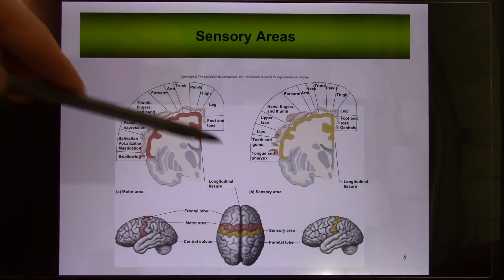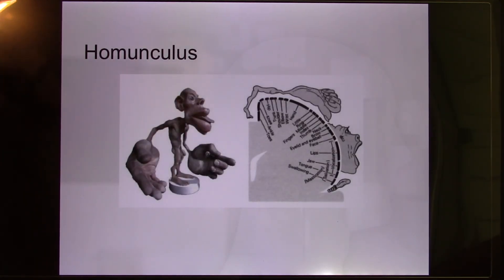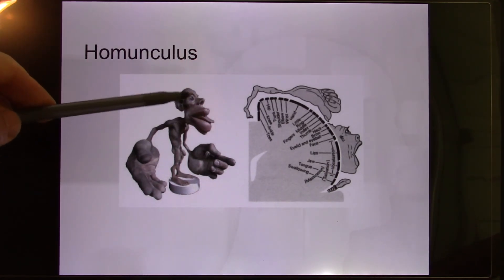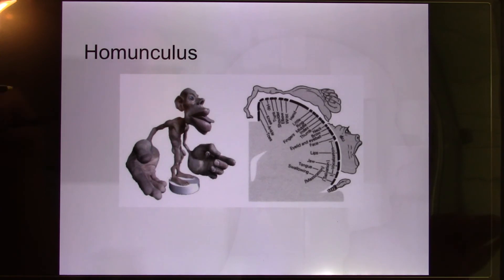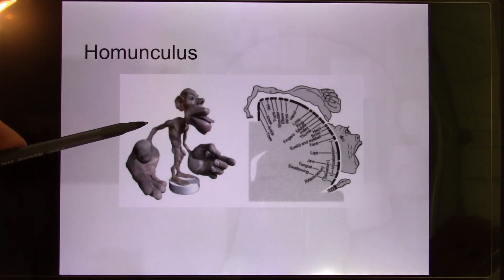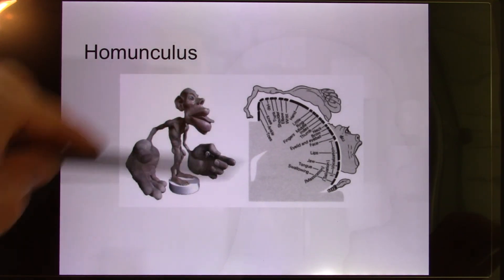If you draw your body based on the number of neurons dedicated to each region, it's called the homunculus — and humans appear to have huge hands, a huge face (especially the lips), and a very small body. This affects our daily behavior: when you want to show affection to someone, you hug or kiss them, because those are our most sensitive body parts — not your elbow, which is an insensitive body part.